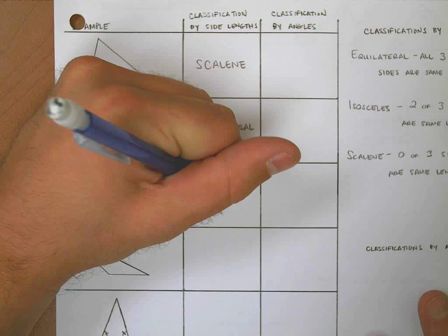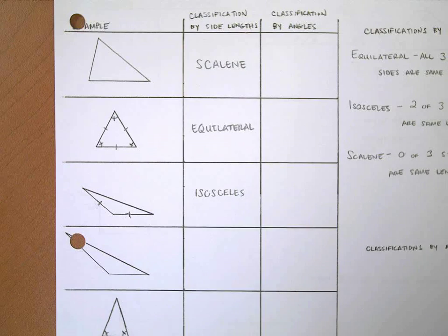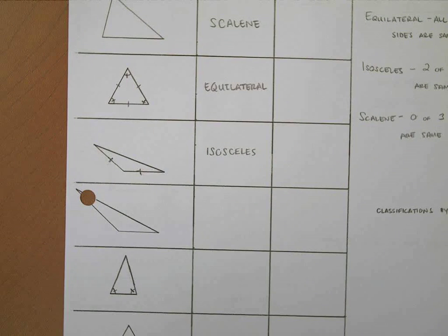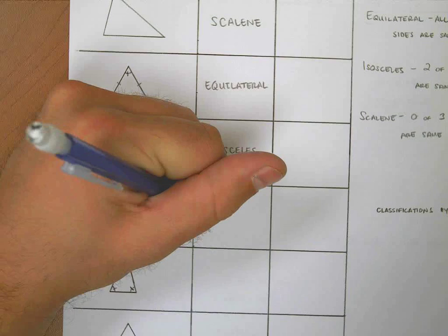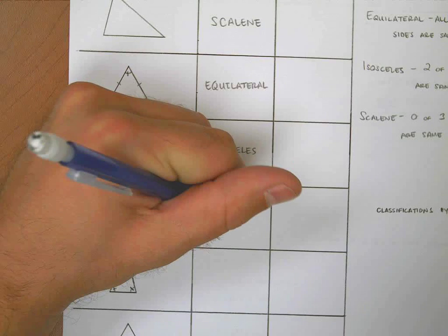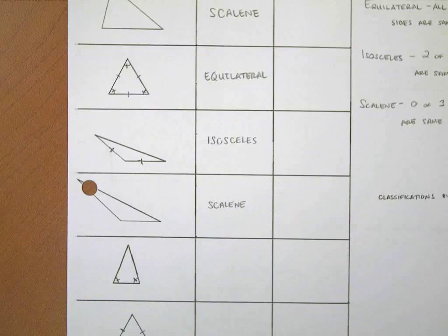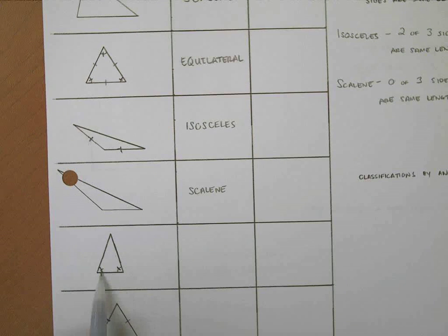Next, I have two side lengths the same, so I can call that isosceles. The next example has no tick marks on it, so I can't assume that any of those sides are the same length — I'm going to call this one scalene.